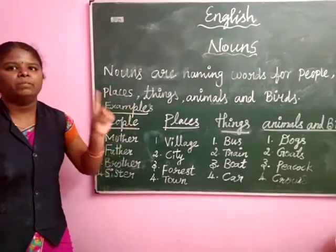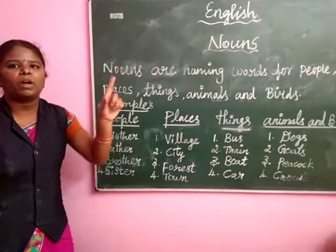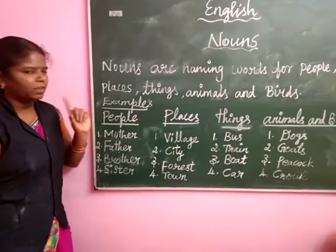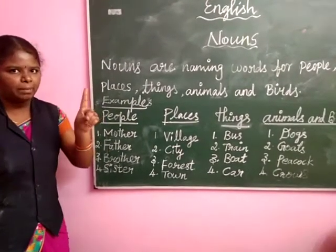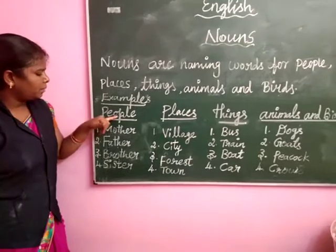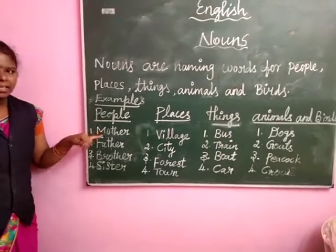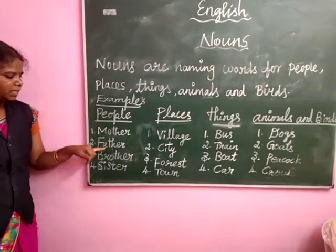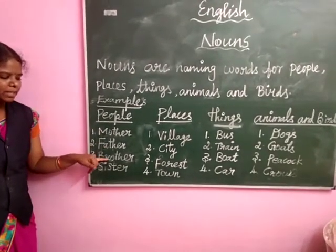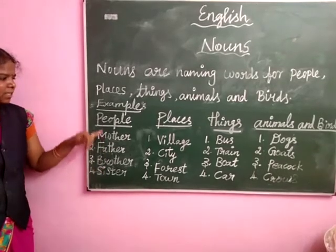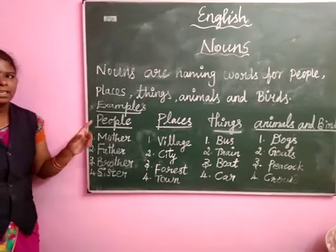Now we will see examples one by one. First one: people. People — mother, father, brother, sister. These are called peoples.